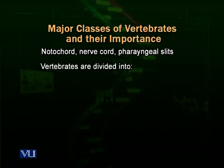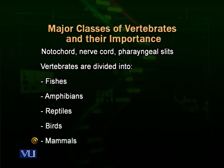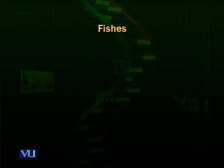We classify vertebrates into five major categories: fishes, amphibians, reptiles, birds, and mammals. We will talk about them one by one, discussing their characteristics and their importance. First of all, we talk about the fishes.